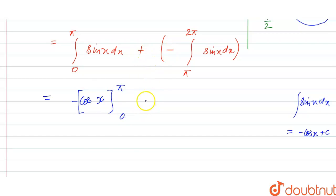And similarly, plus minus will be minus, and minus of integral sine x is equal to minus of cos x. So minus of cos x, and the limit is from π to 2π.